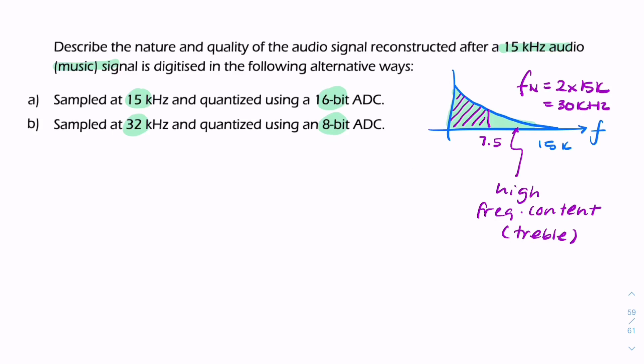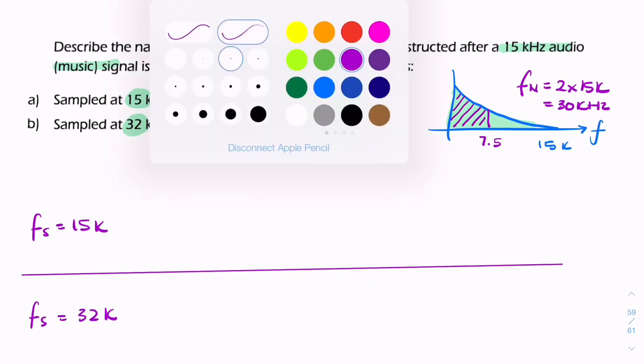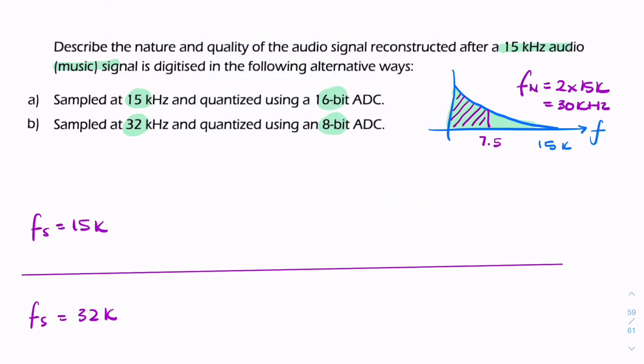We can put that in a neat little table. If the sample rate is 15k and if the sample rate is 32k, we're losing all the treble at 15k, whereas if the sampling rate is twice that, 32k, we'll have the full spectrum.